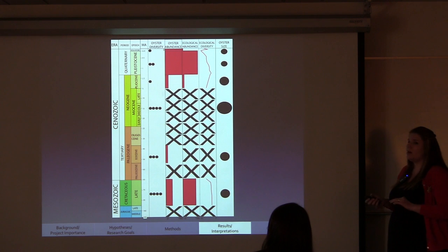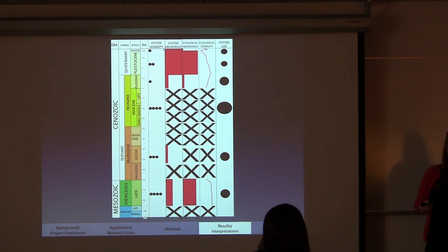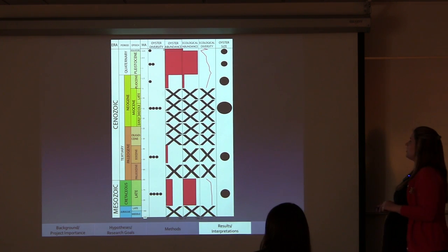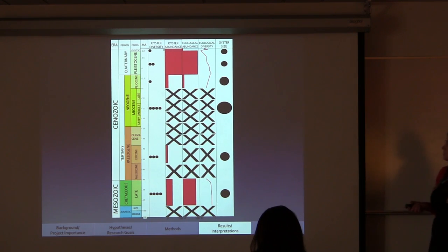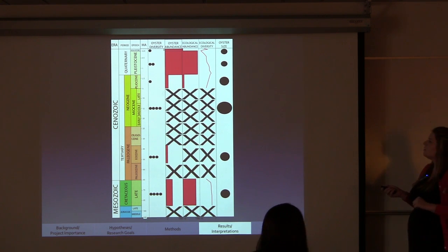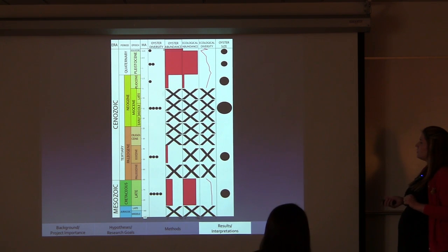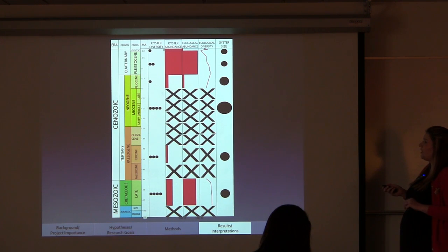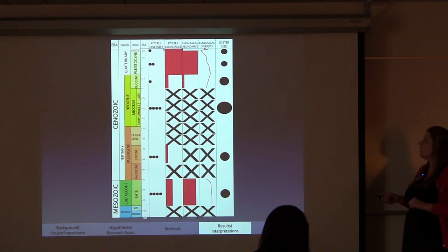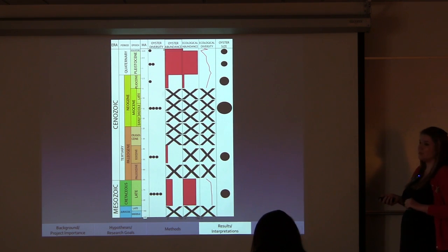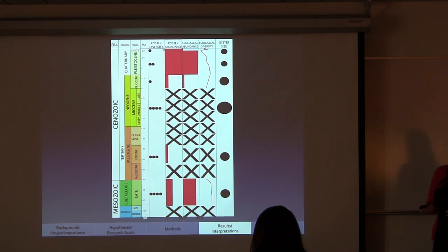Adding all of that size information onto our stratigraphic column — the size of the circles represents the size of the oyster. In the Miocene we have our largest oysters. In the Eocene, late Cretaceous, and Pliocene we still have fairly large oysters, but slightly smaller than the Miocene ones. Then our Pleistocene and Holocene are the smallest oysters that we see.